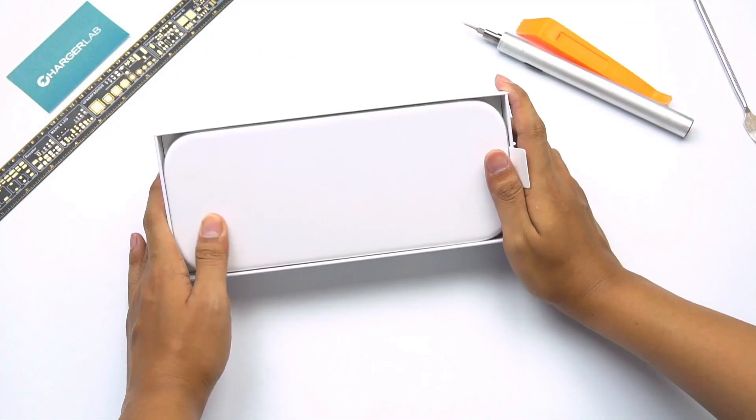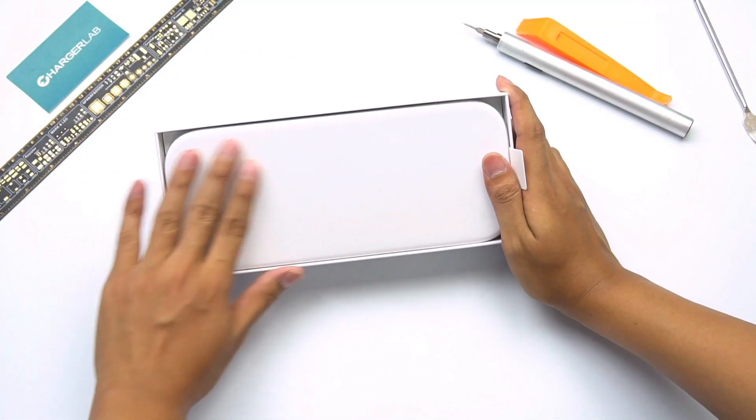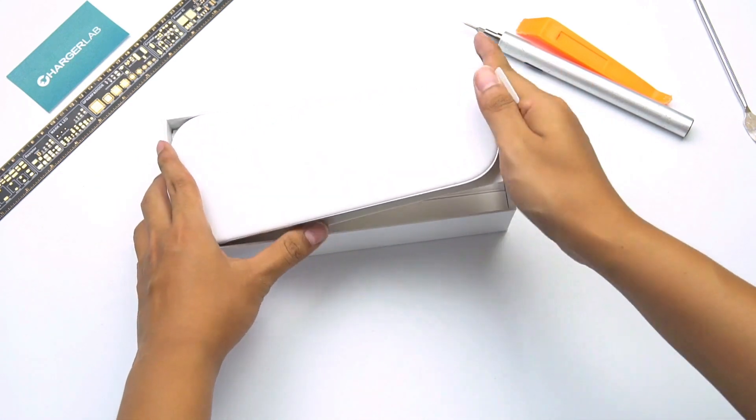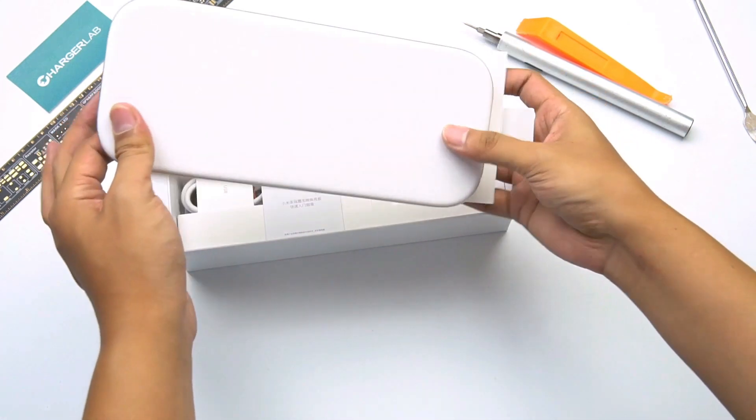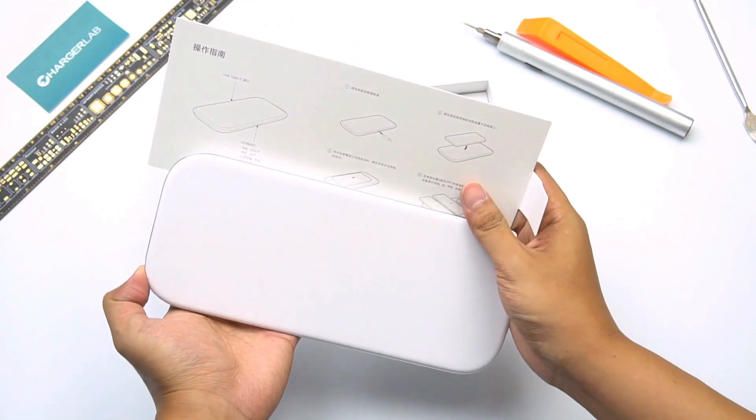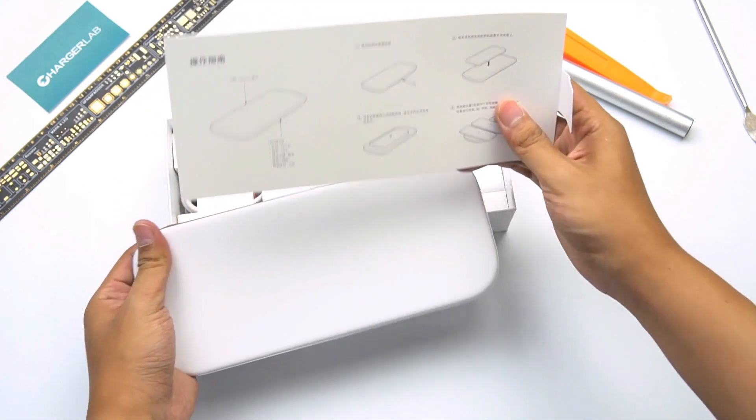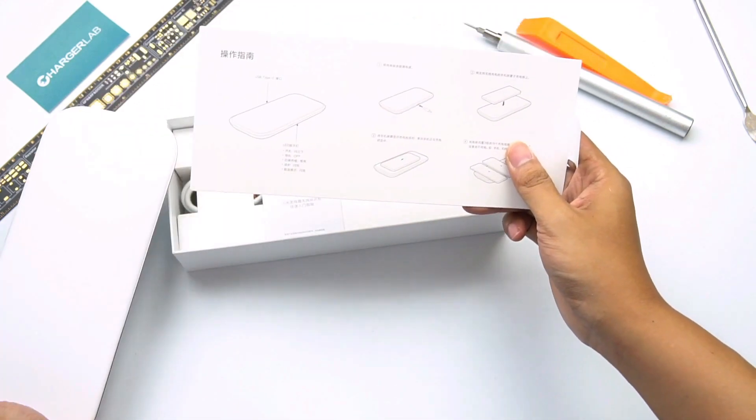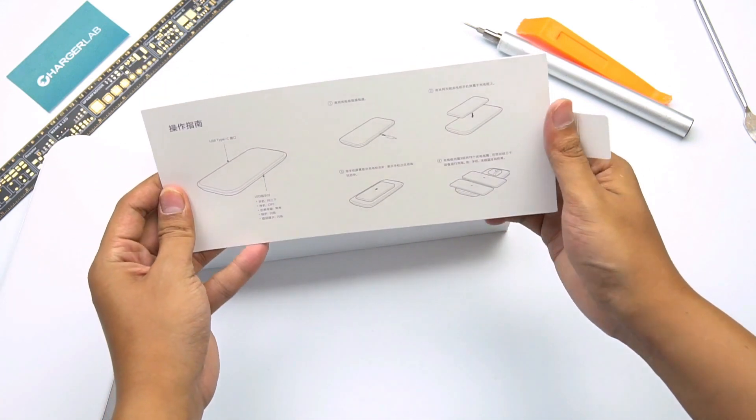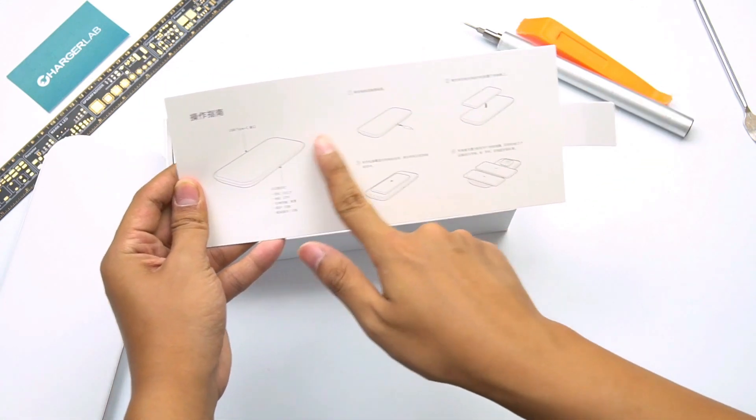After opening the box, we can see the charger. There isn't anything to protect it. You can see it right after you open it. And the guide paper is placed under the charger. We can know how to use, where to place, where is the interface, how many devices can support.